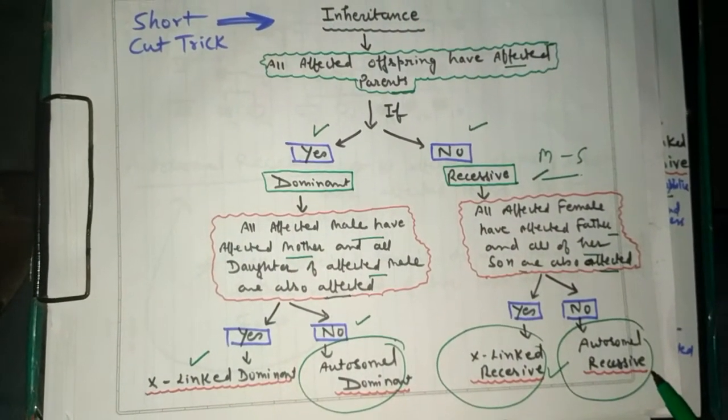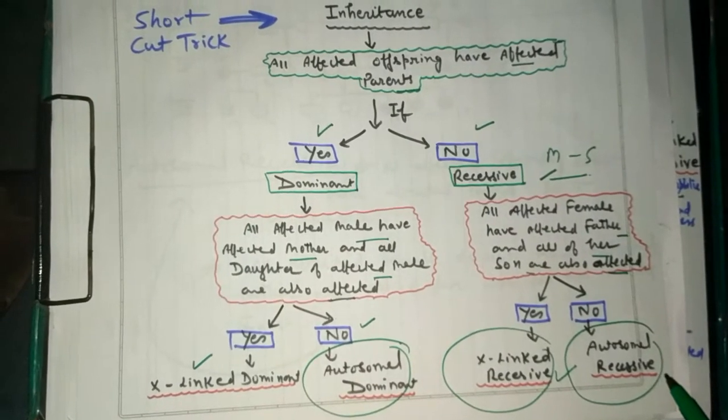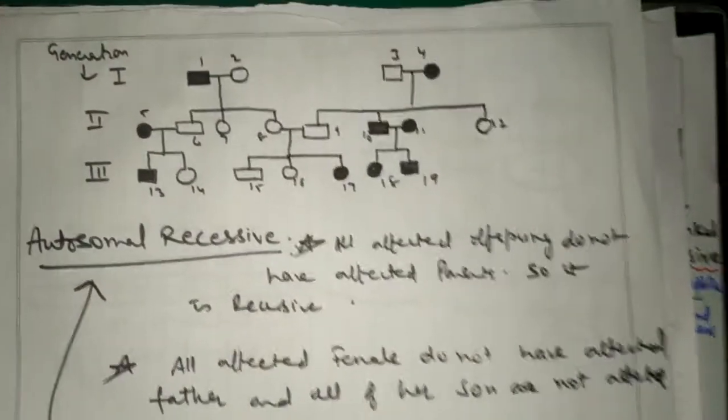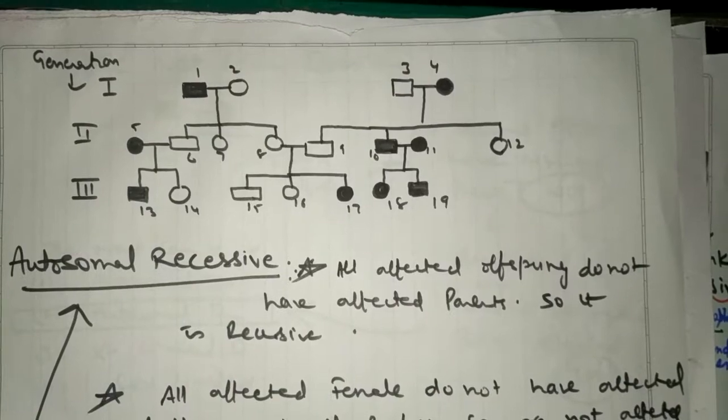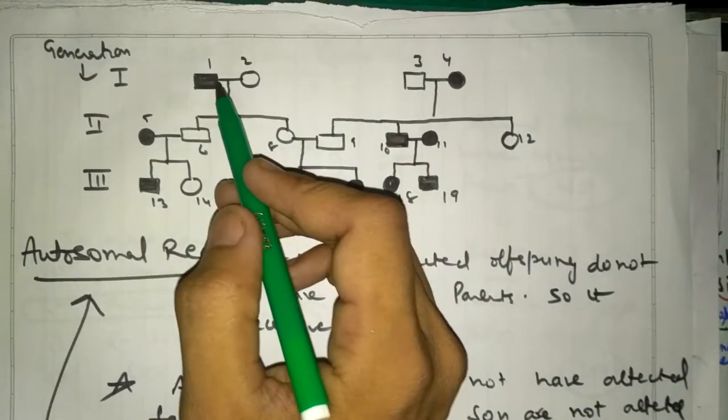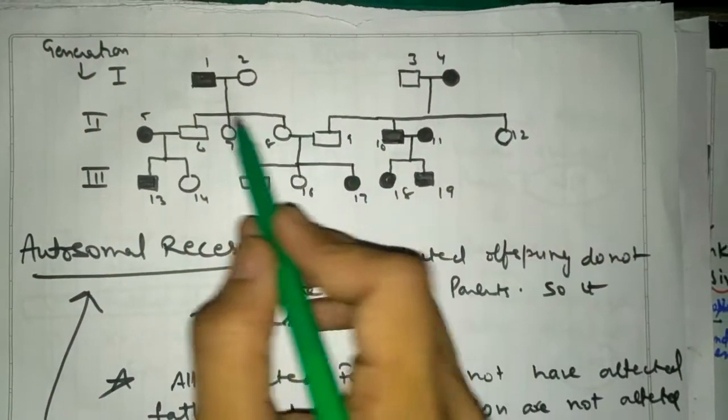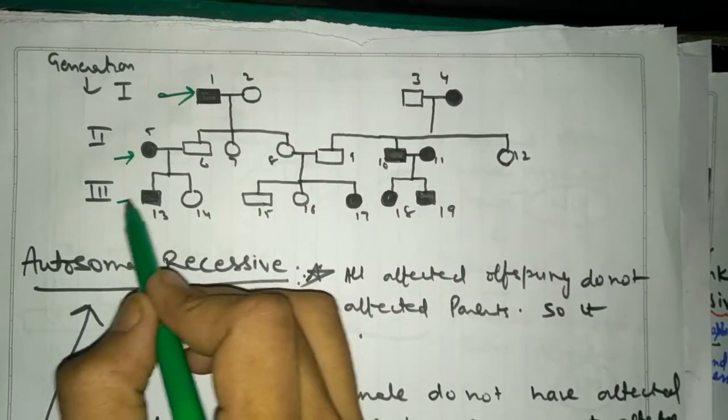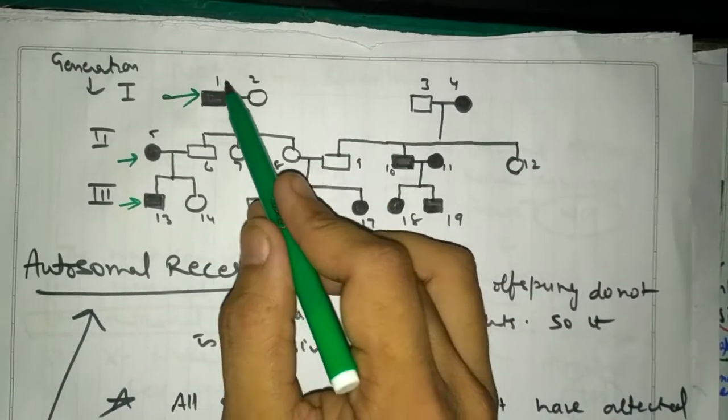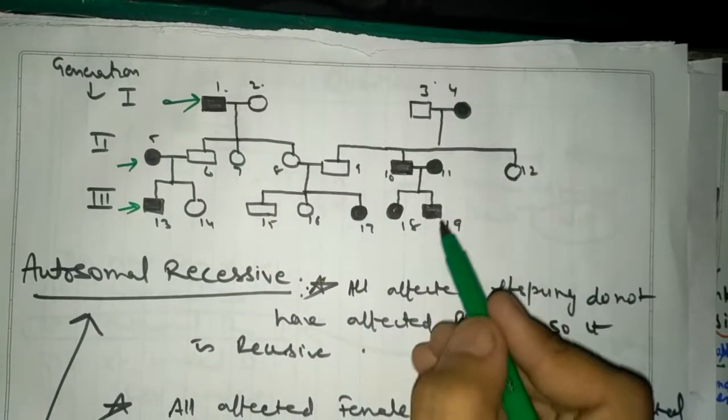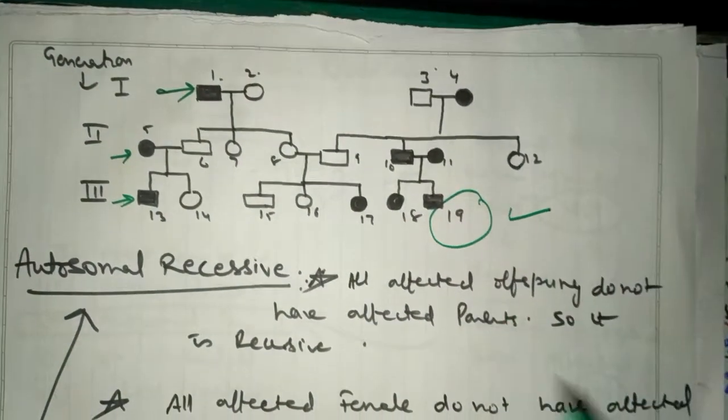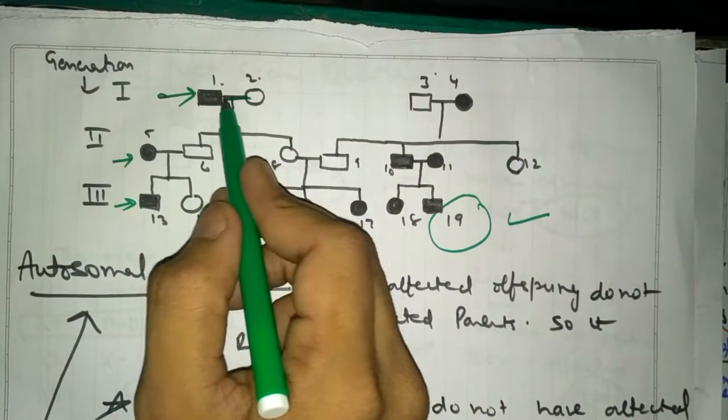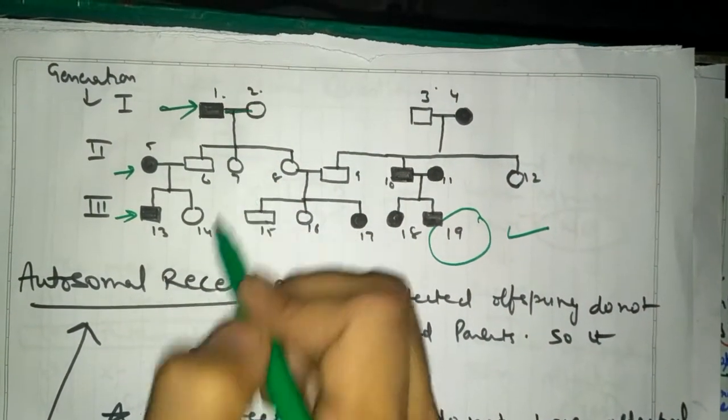Now I will apply that shortcut here. First of all, how we write the generation: there are three types - generation 1, 2, and 3, and the offspring are shown by 1, 2, 3, 4. There are 19 individuals. This sign is showing the marriage and this is showing the offspring.